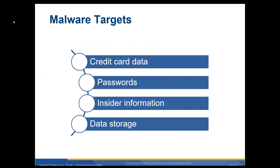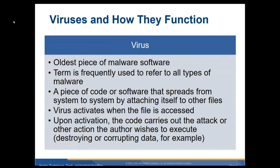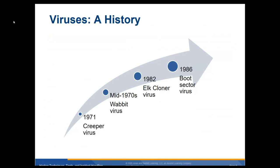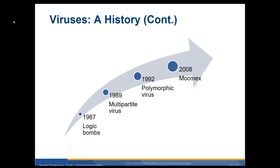What targets do attackers go after? Credit card data, passwords, insider information, proprietary data from another company, and data stored in databases. Viruses are the oldest piece of malware — the term is frequently used to refer to all types of malware. A virus is a piece of code or software that spreads system to system by attaching itself to other files, but it must be activated by the user. Once activated, it carries out the attack and can corrupt or destroy data.